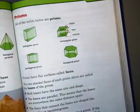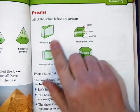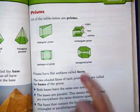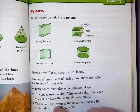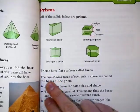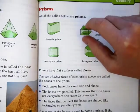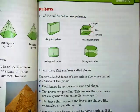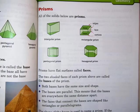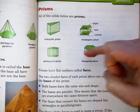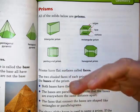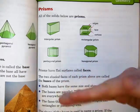Then there's a prism. All of these solids here are prisms. They have flat surfaces called faces, and the two shaded faces of each prism are called the bases. Both bases have the same size and shape, they're parallel, which means that the bases are everywhere the same distance apart.